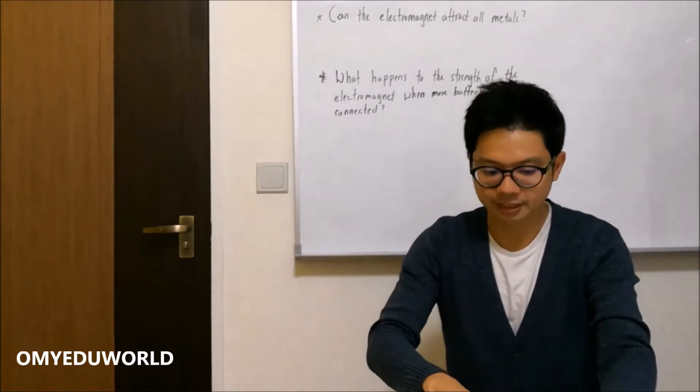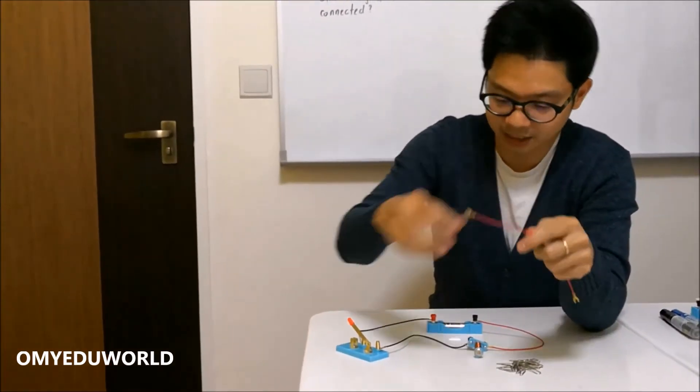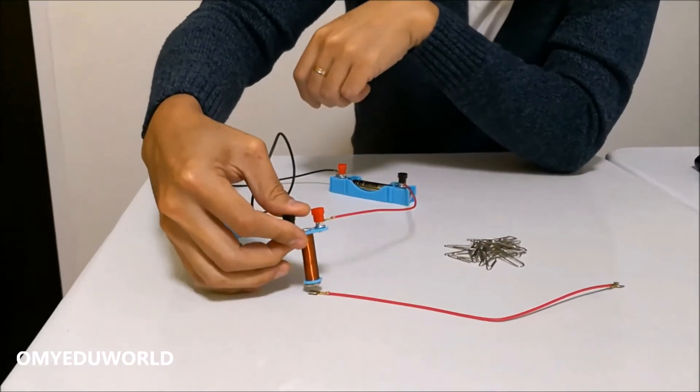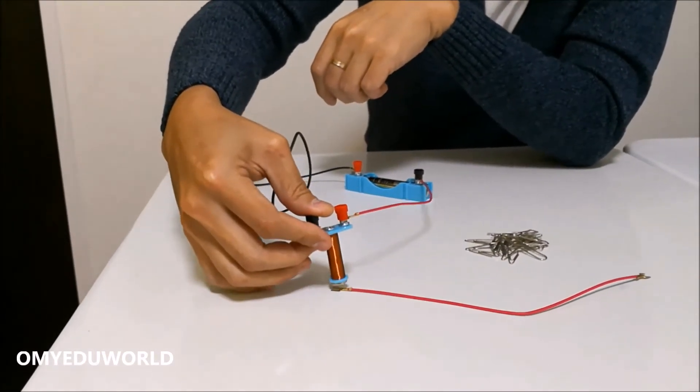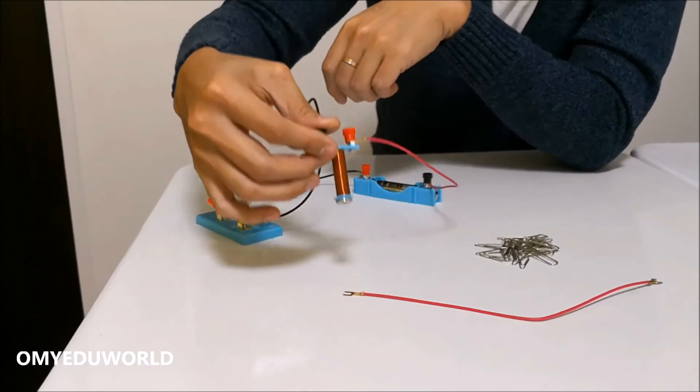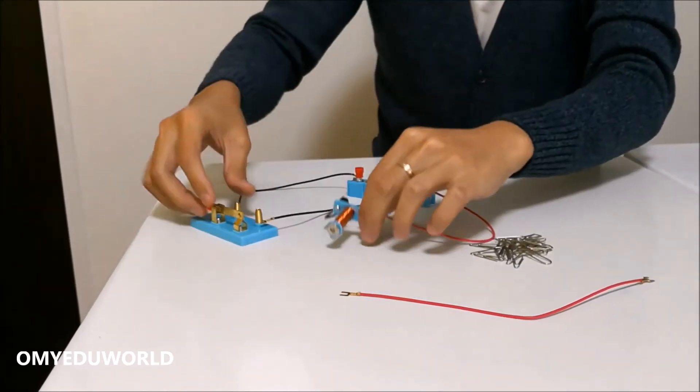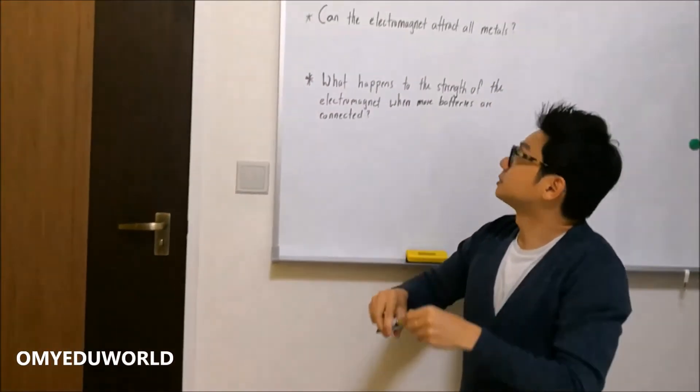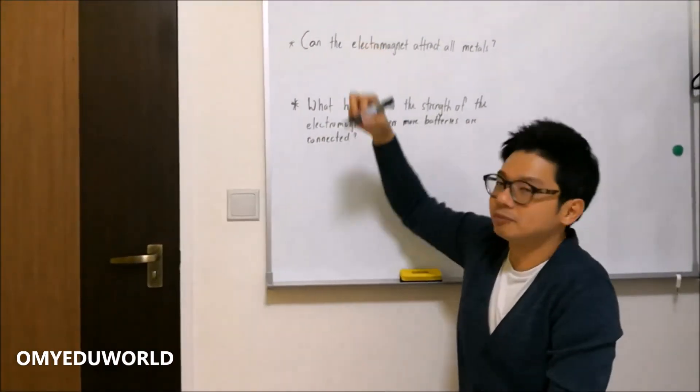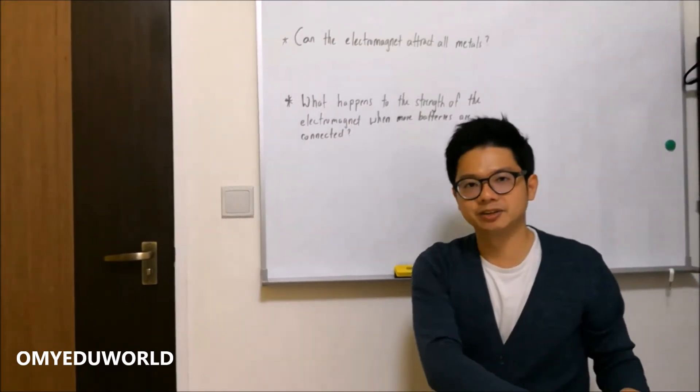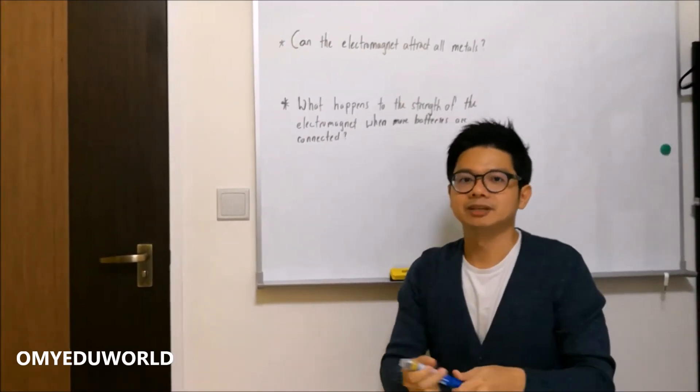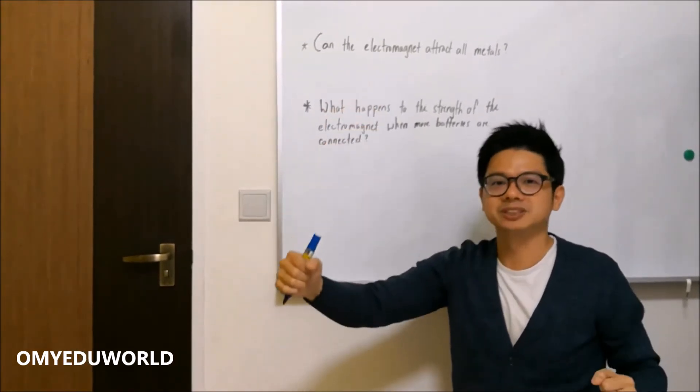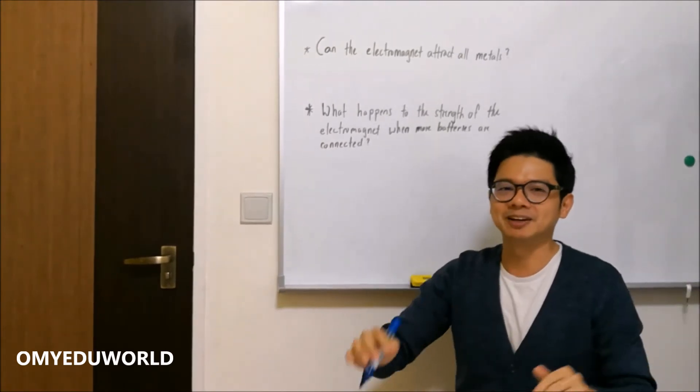Electromagnets do not attract all matters. Basically they only attract four types of matters. I'll go through that later. But let me show it to you. You can see this is also a matter, but if I bring this electromagnet close to this pen, you can see that it does not pick up at all. Because electromagnets only attract four types of matter, and I can teach you an easy way to remember.